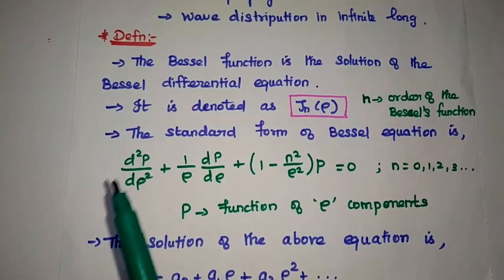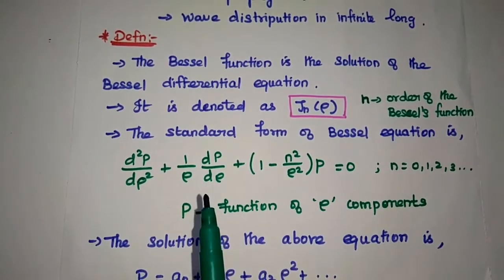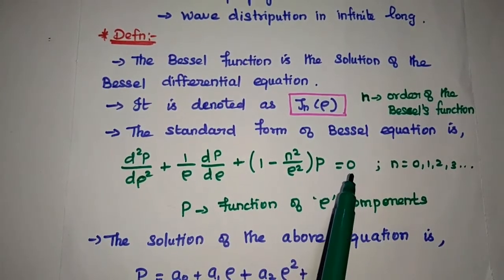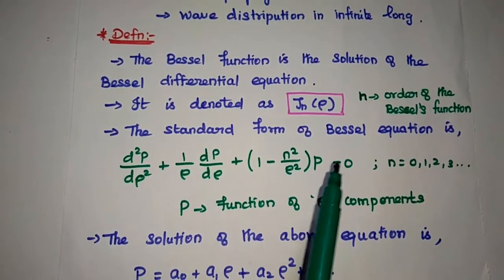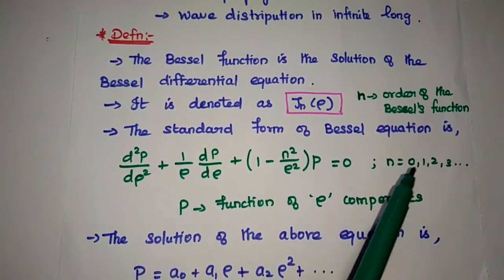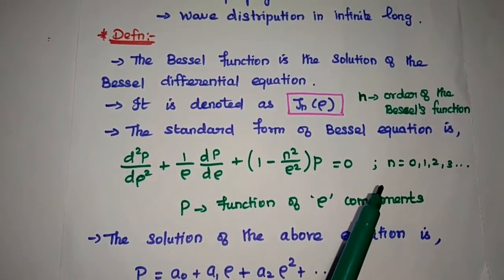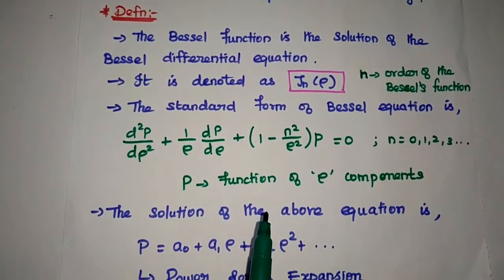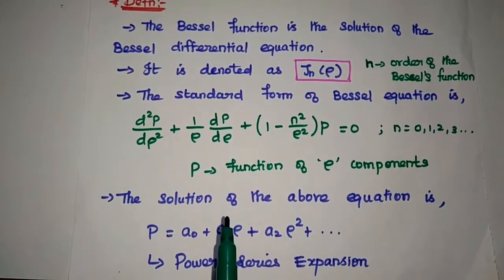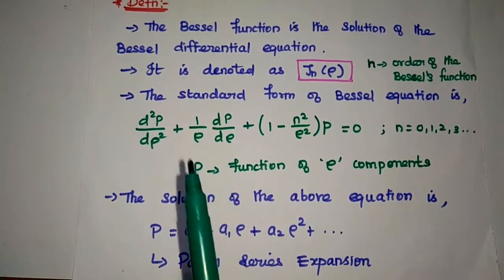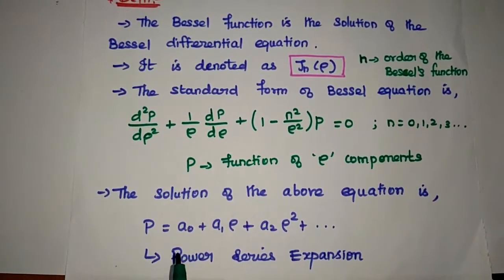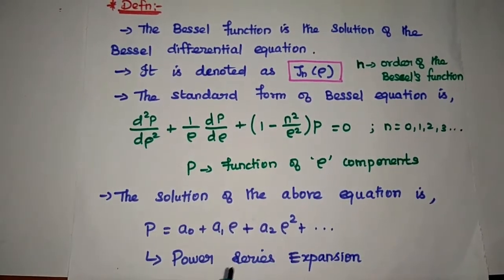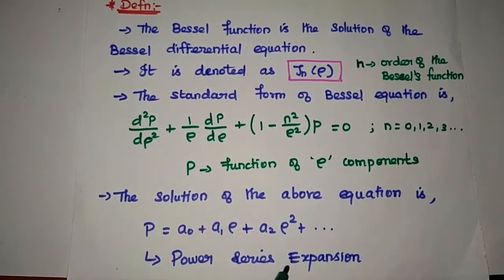The standard Bessel equation is: d²P/dρ² + (1/ρ)(dP/dρ) + (1 − N²/ρ²)P = 0. Here, N is the order of the Bessel function; it can be 0, 1, 2, 3, etc. P represents the function of the rho component in a circular waveguide. The solution of this equation is given as a power series expansion: P = A₀ + A₁ρ + A₂ρ².